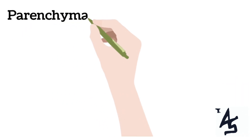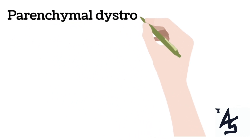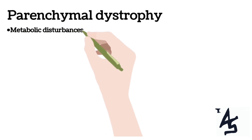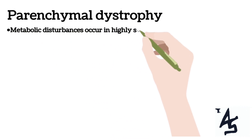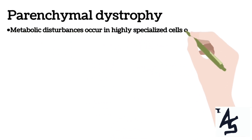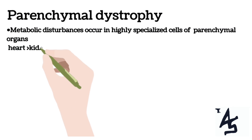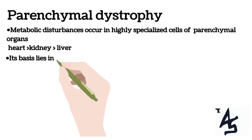So what is parenchymal dystrophy? Well it's basically the metabolic disturbances which mainly occur in the highly specialized cells of parenchymal organs, like for example the heart, kidney, or liver.